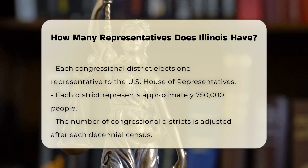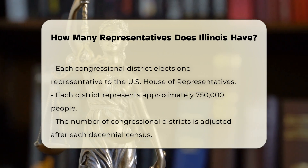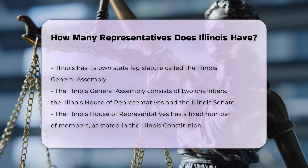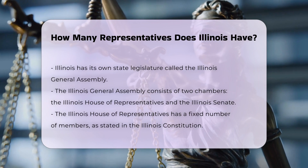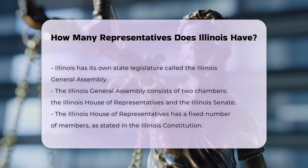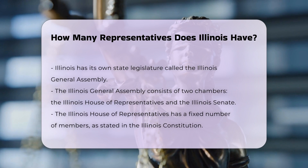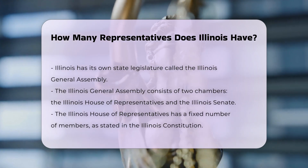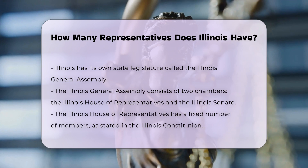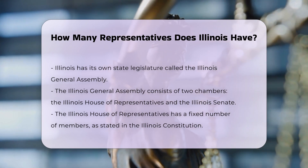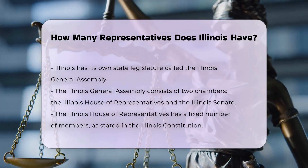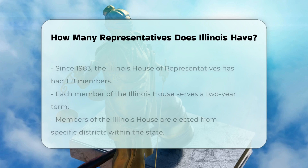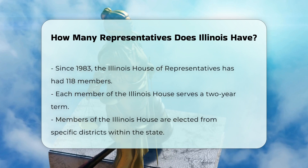In addition to federal representation, Illinois also has its own state legislature known as the Illinois General Assembly. This assembly consists of two chambers: the Illinois House of Representatives and the Illinois Senate. The Illinois House of Representatives has had 118 members since 1983, each elected from a specific district within the state. These members serve two-year terms and are responsible for legislating at the state level.